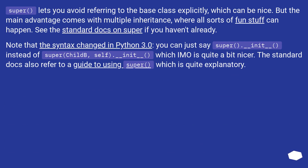But the main advantage comes with multiple inheritance, where all sorts of fun stuff can happen. See the standard docs on super if you haven't already. Note that the syntax changed in Python 3.0 — you can just say `super().__init__` instead of `super(Child, self).__init__`, which is quite a bit nicer. The standard docs also refer to a guide to using super which is quite explanatory.